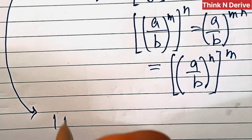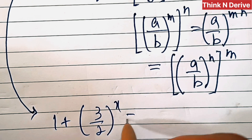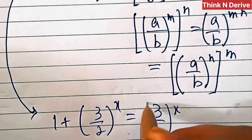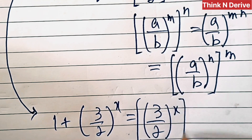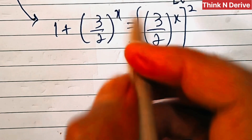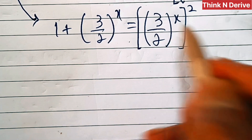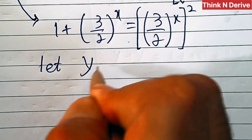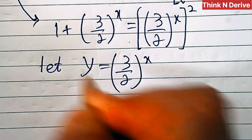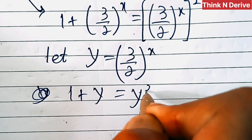So we have 1 plus (3/2)^x equals (3/2)^x whole square. Now look at this — we have (3/2)^x appearing on both sides. So let's make y equal to (3/2)^x. The equation will become 1 plus y equals y squared.